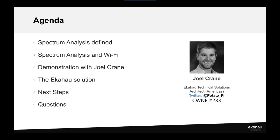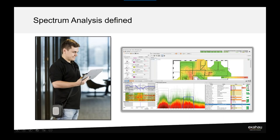Please don't wait till the end to ask questions — you can type in your questions as we go, and we'll try to answer those in real time. First, spectrum analysis defined. Wi-Fi works at two layers of the OSI model — the two least intelligent layers, and it's exposed to everyone. That's layer one, the physical layer, and layer two, the data link layer.